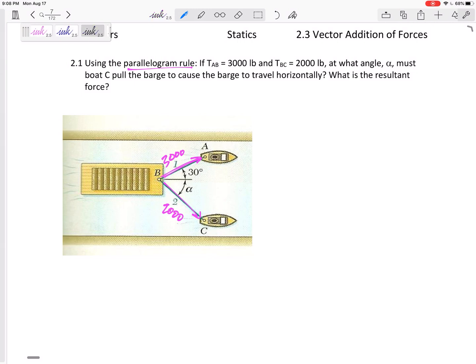Alright, so this is sort of asking you to add these up, but it's telling you that these two boats are pulling it, and it causes the barge to travel horizontally. So what does that mean? That means this resultant of these two is going to be horizontal. So they kind of told you the direction of the resultant. It is perfectly horizontal.